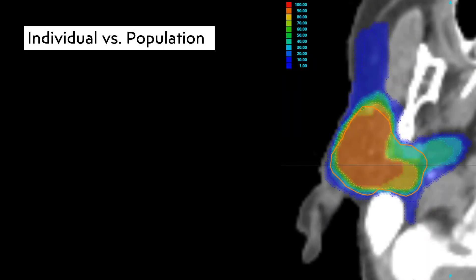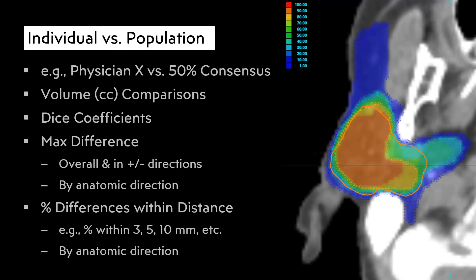Beyond that, we can look at any individual versus a population — examining any particular participant or physician versus particular consensus lines. We can study volumes, and Dice coefficient is useful to get a relative overlap. But there's a lot of other things we can look at: what's the max difference from an individual to a consensus line, in what direction are most of the larger differences happening, and what percent of the differences are within a certain distance. This really helps us find areas where variation is high, pointing us to opportunities for learning and discussion.